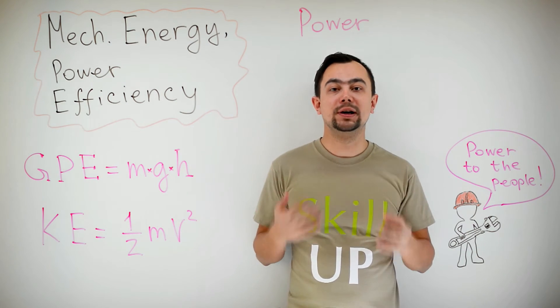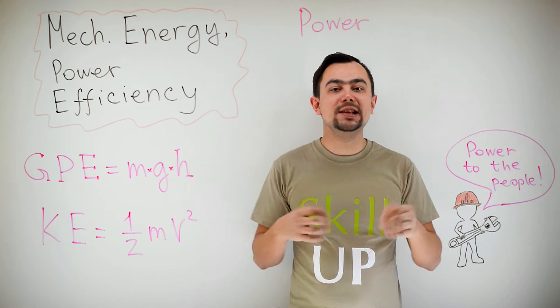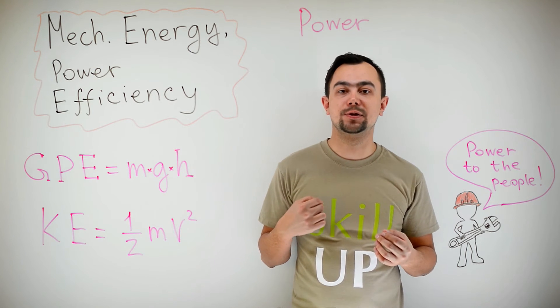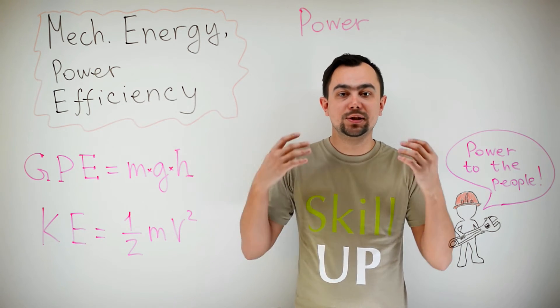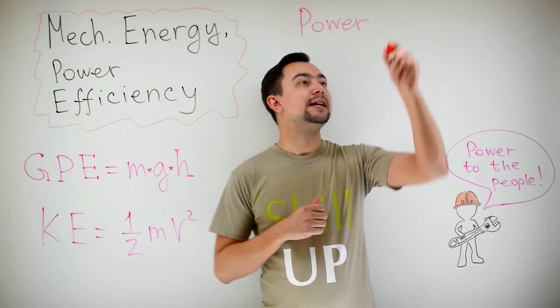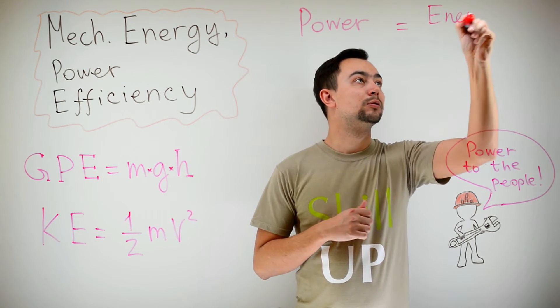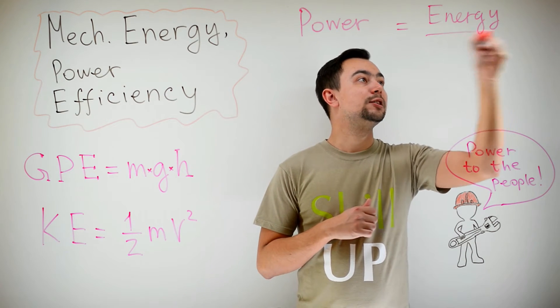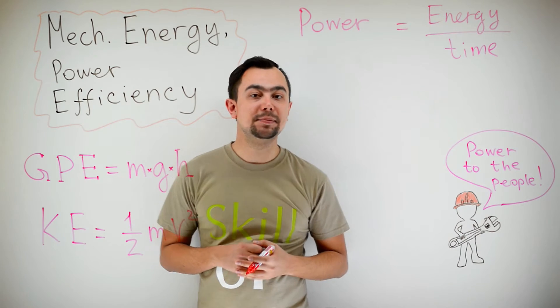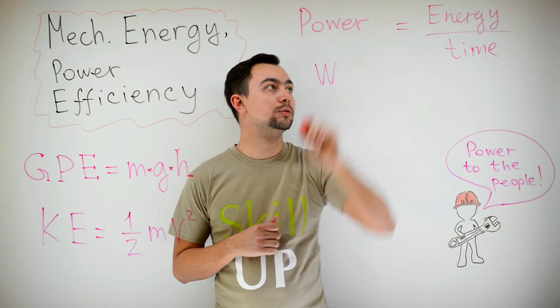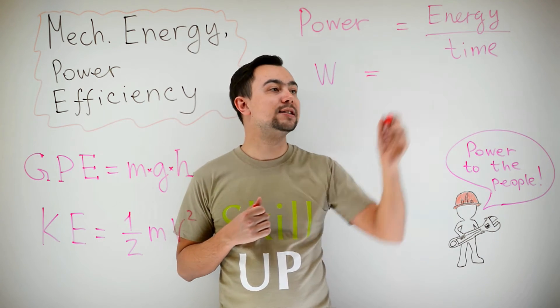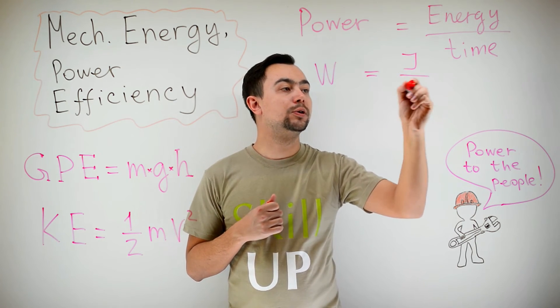Power is simply the rate of energy transfer. But the amount of energy transferred is work. So, it's the rate of work. Or simply, power is the energy divided by time. Power is measured in watts. Energy is joules and time is seconds. So, we can say that a watt is joule per second.